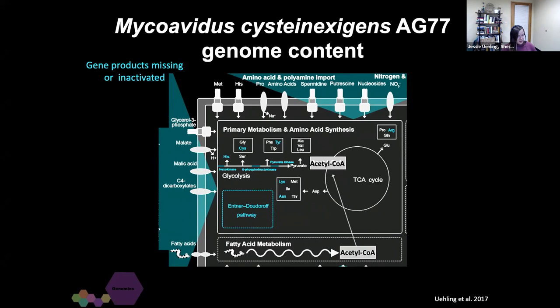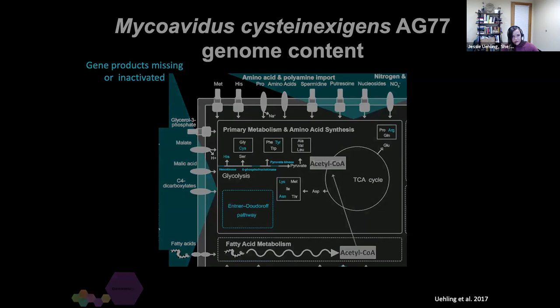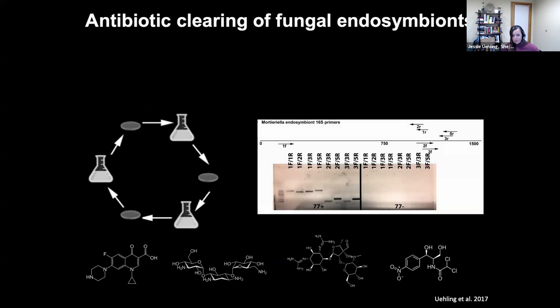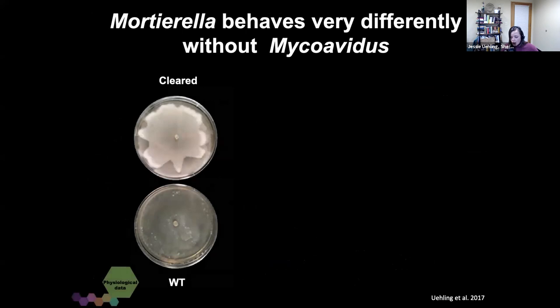We've used this logic to build a story about what these two are doing for each other — they're essentially sharing lunch; they're feeding each other and eating each other's byproducts. We leverage this clearing approach: we put these fungi on antibiotics — the same kinds of drugs that you would take if you were sick — and passage these tissues back and forth from solid to liquid media until we get a negative result with a PCR assay. We can use gene sequencing to detect the presence of these bacteria and confirm when we have a cleared isolate. Once we generate lines of fungi — some with bacteria in their cells and some without — we can use them in comparative assays and ask how these endosymbionts affect the behavior of their fungal hosts.